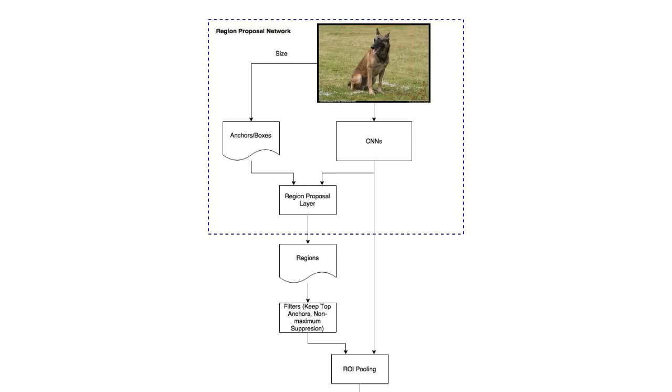The next version, faster R-CNN, performs a better job by incorporating an attention mechanism using a region proposal network, an RPN. Faster R-CNN performs object detection in two stages.